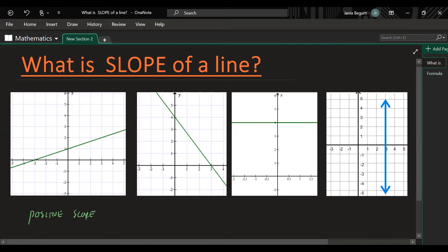And for the second image, as you read from left to right, it's going downward. So we say that this line has a negative slope.